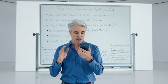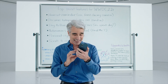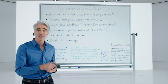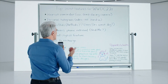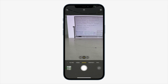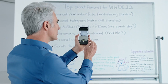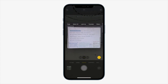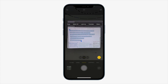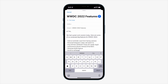So live text is actually a feature which makes use of object detection and also natural language processing. This machine learning algorithm is able to identify text within images and you're able to even select it, copy it, paste it. If the text is a phone number, you can even make calls on it. So this is a really neat machine learning based feature that Apple has added.